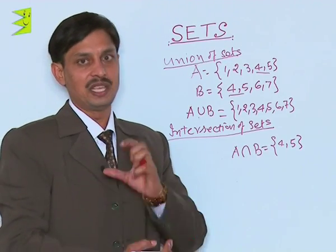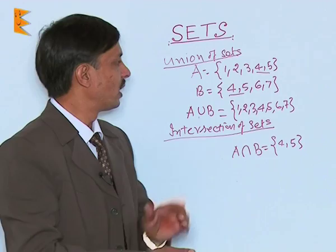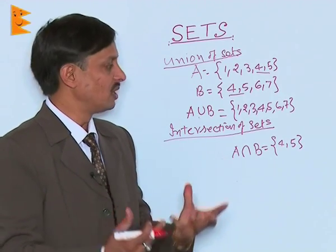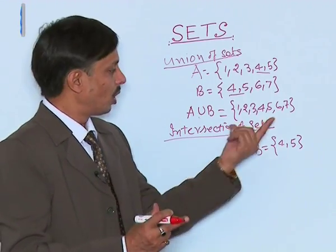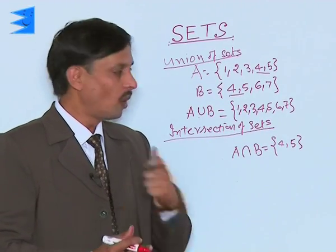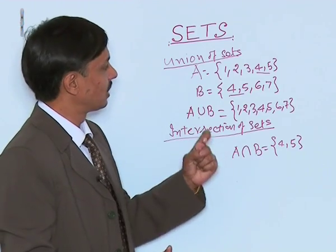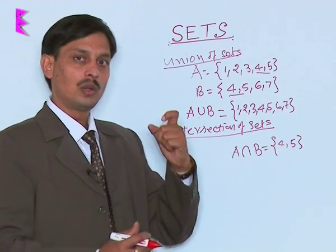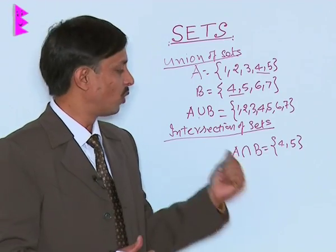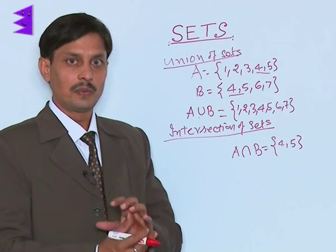So there are two major operations on sets. One is the union of two or more sets, which means writing all the elements present in the sets. And intersection means writing only those elements which are common between the sets of which we want to find the intersection.